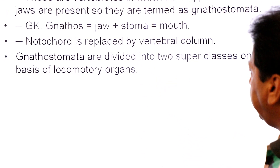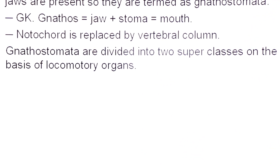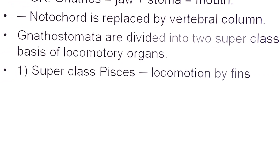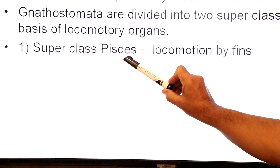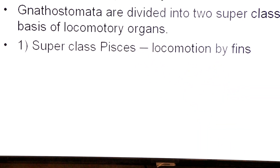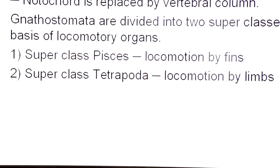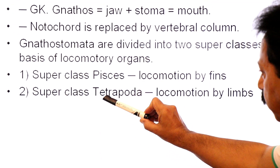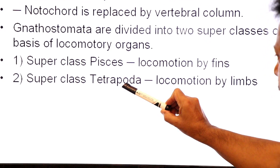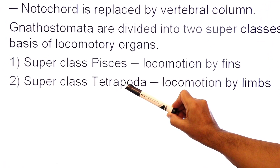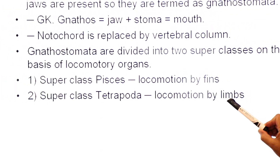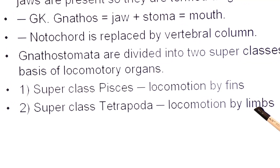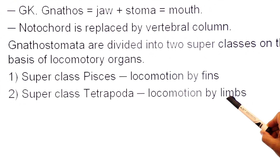Gnathostomata are divided into two superclasses on the basis of locomotory organs. First, superclass Pisces — fishes — where locomotion takes place by fins. And number two, superclass Tetrapoda: tetra means four, poda means limbs, so locomotion takes place by four limbs — two are known as front limbs and the remaining two are known as hind limbs.